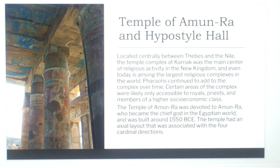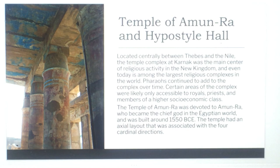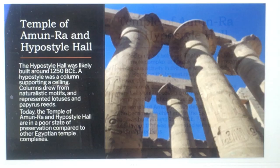Certain areas of the complex were likely only accessible to royals, priests, and members of a higher socioeconomic class. The Temple of Amun-Ra was devoted to Amun-Ra, who became the chief god in the Egyptian world, and was built around 1550 BCE. The temple had an axial layout associated with the four cardinal directions: north, south, east, and west.